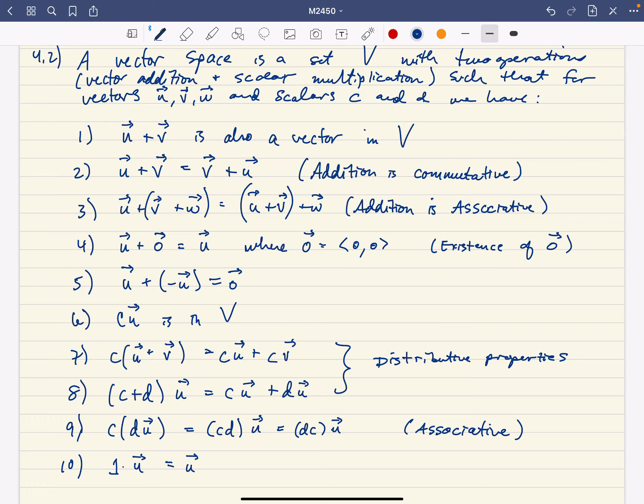All right, at this point I want to move on to section 4.2. This is about abstract, what are called vector spaces, and these are more general sets, but we're going to use R² as a model. And so what we're going to do is we're going to say that a set V is a vector space.